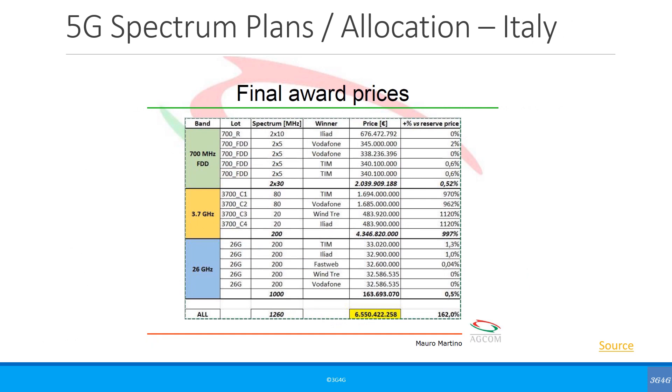Italy allocated 5G spectrum in all three bands: the coverage layer in 700 MHz, the capacity layer in 3.7 GHz, and the high throughput layer in the 26 GHz band.